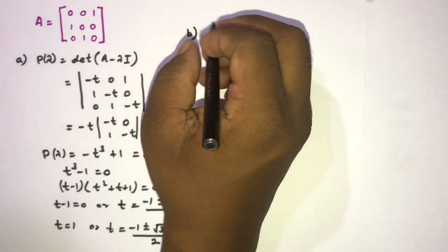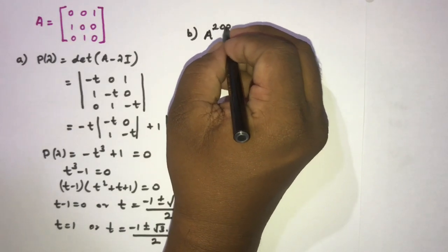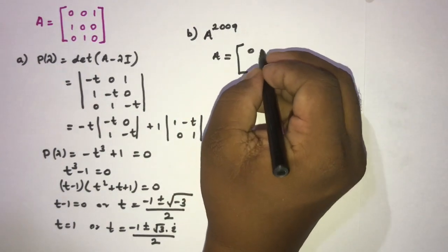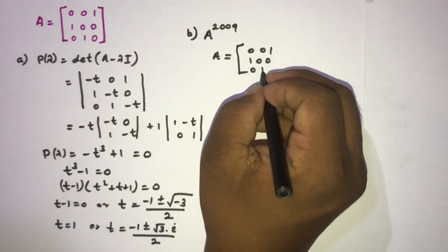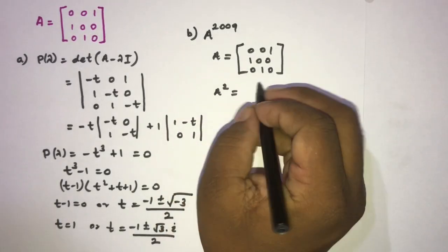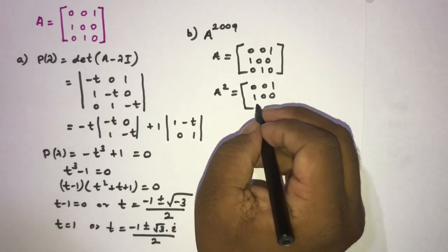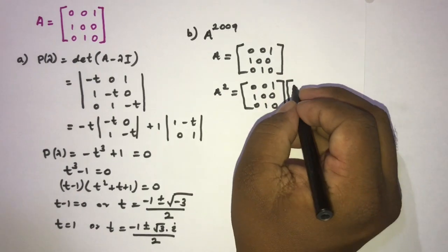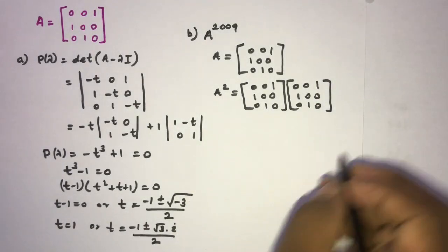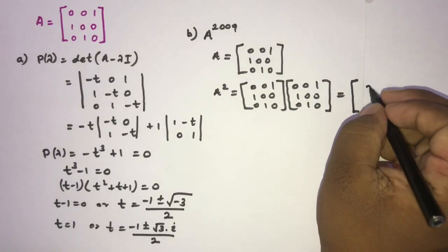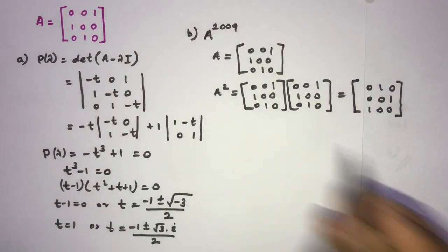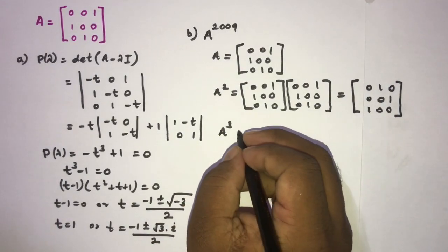For part b, we need to calculate A raised to the 2009th power over the complex numbers. We know A is the 3×3 matrix with rows [0, 0, 1], [1, 0, 0], [0, 1, 0]. Now we compute A squared by multiplying A by itself.